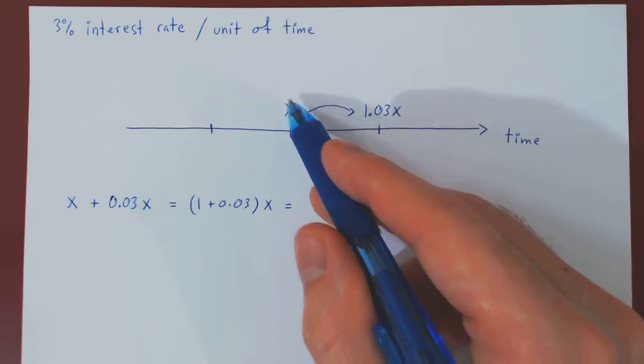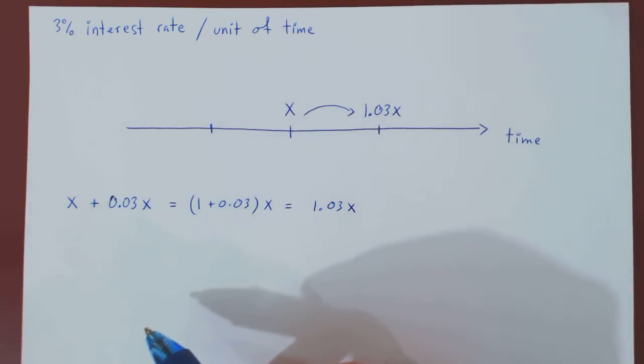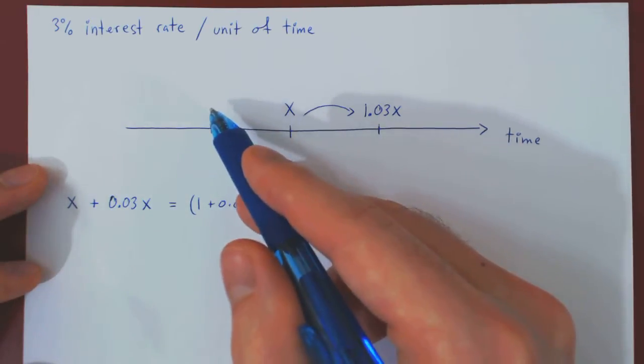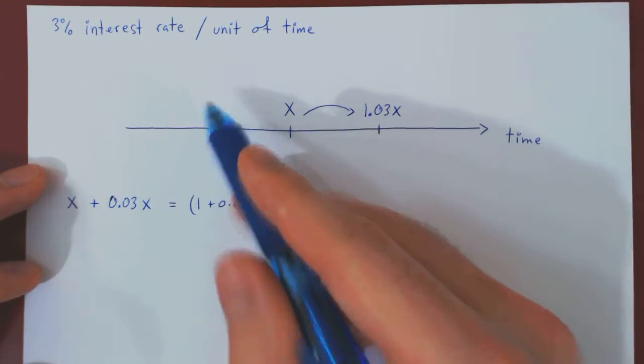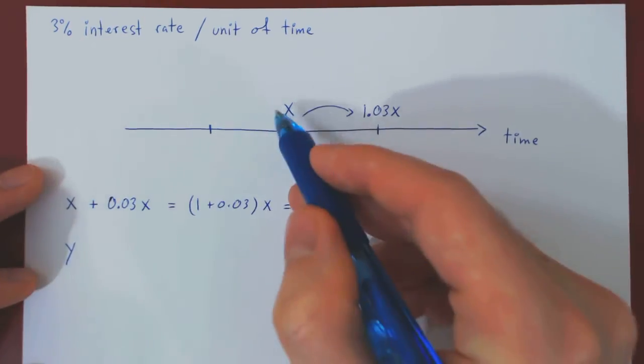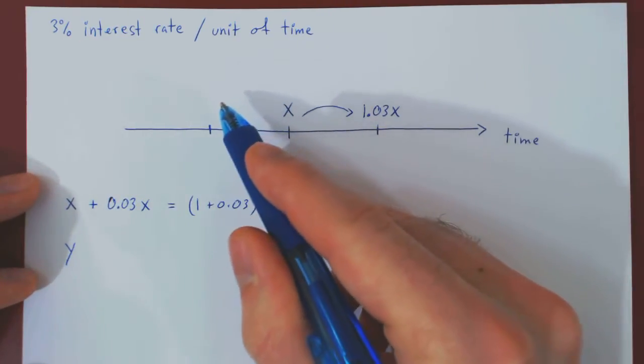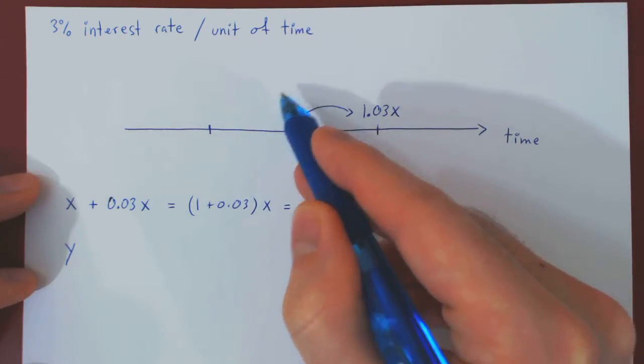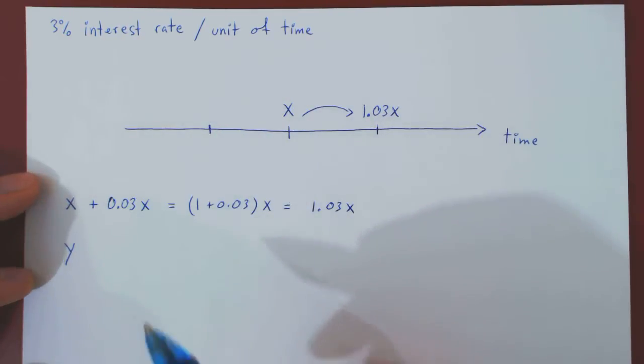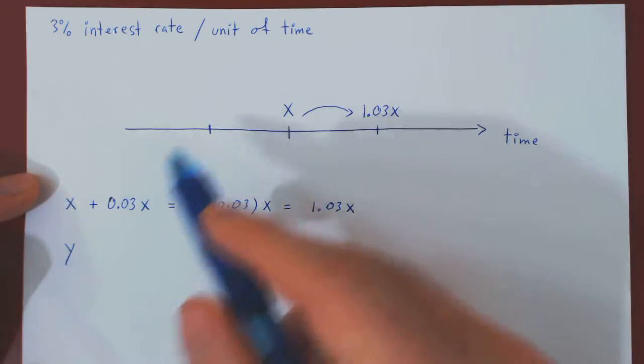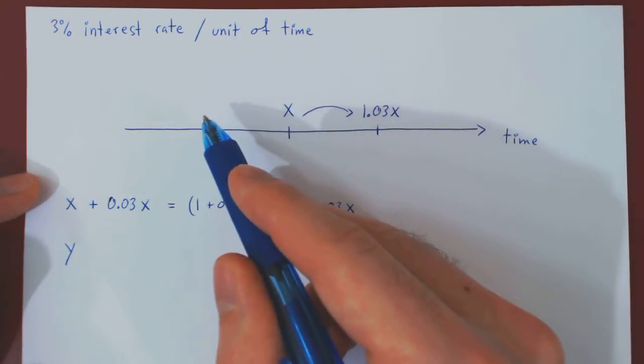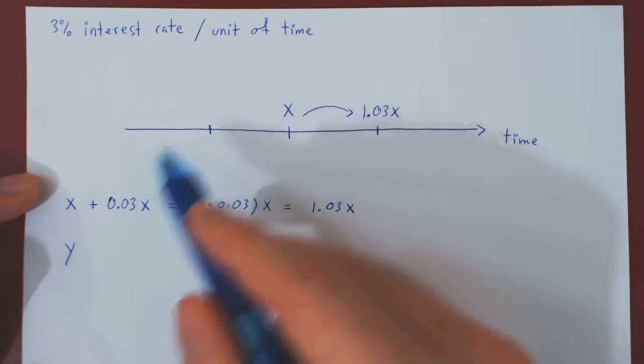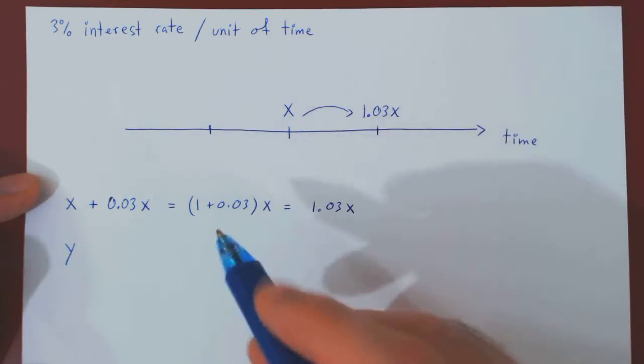Now what if we bring X back in time by one unit of time? Well, let's do it here. Suppose that we call this value Y. Well, if we move X back in time by one unit, and we bring it back forward in time by one unit, it must be worth X again. So imagine Y now being the value of X one unit backward in time. So if we bring back Y forward in time by one unit, it will be worth X.